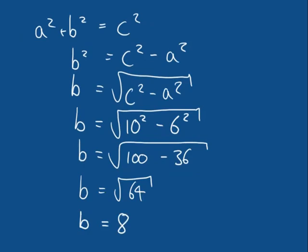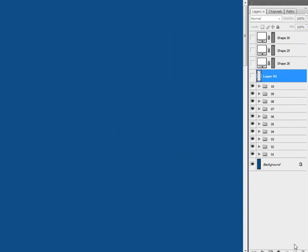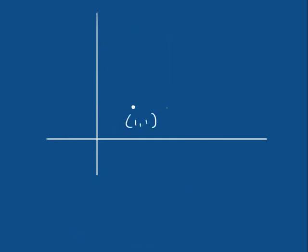So whilst this is very useful for working out the lengths of sides on a right-angled triangle, Pythagoras' theorem is actually even more useful for finding the distance between two points. Let's say we have two points — I'm going to draw a quick set of Cartesian axes. Let's say I had a point at (1, 1) and another point at (3, 2). How are we going to find the distance between these points using Pythagoras' theorem? Well, we can construct a right-angled triangle using those two points.